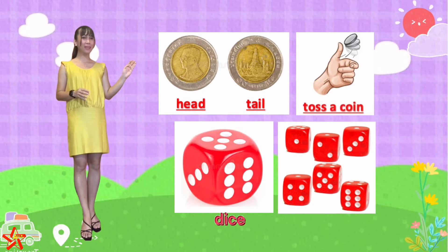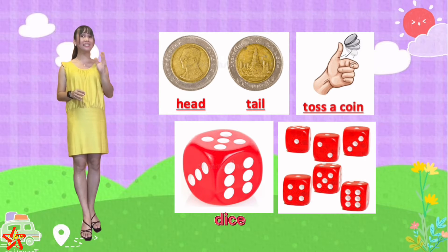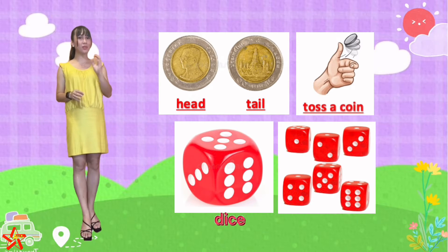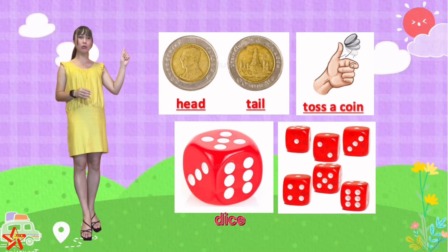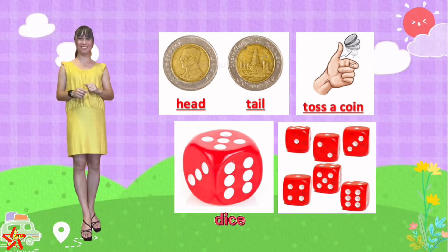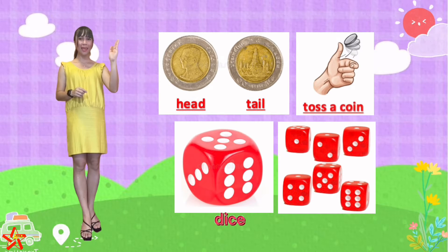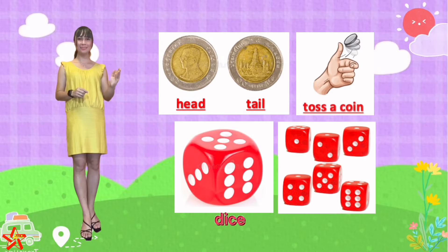I repeat. This dice represents six sides. The sides are: we have one, two, three, four, five, and six. Remember — head, tail, and then the dice.